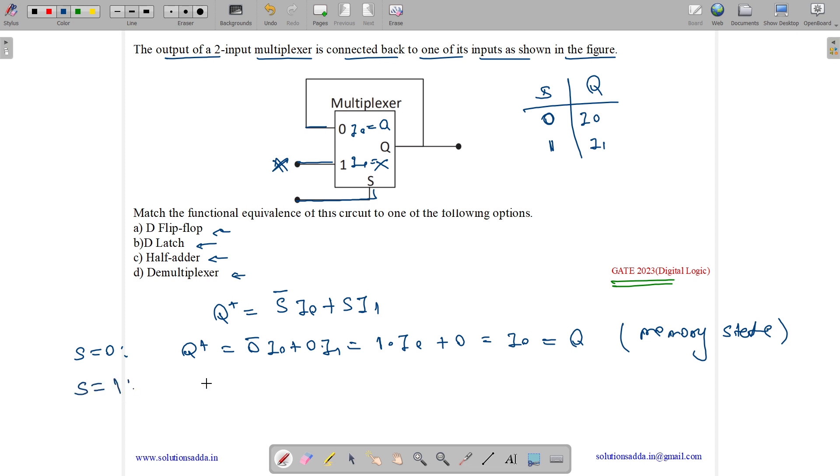Now what happens for s equals 1? There q plus equals 1 complement i0 plus 1 into i1. So 1 complement equals 0 into i0 plus i1. So q plus equals x. q plus equals i1, which equals x. So here we have got q plus equals x, which means output equals the input.